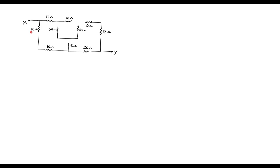Here we can observe that this 10 ohm and 10 ohm are in series. We can replace these two resistors by a single resistor of 20 ohm. Similarly, here 4 ohm and 12 ohm are in series — we can replace these two by a single resistor of 16 ohm. Apart from that, no other resistors are in series or in parallel. So now we are supposed to apply star-delta transformation to reduce this further.